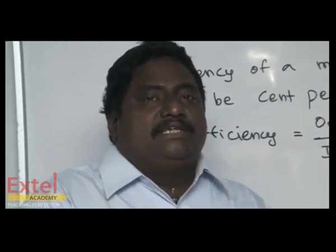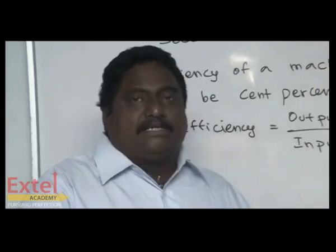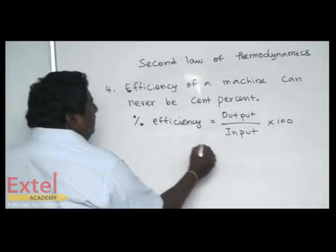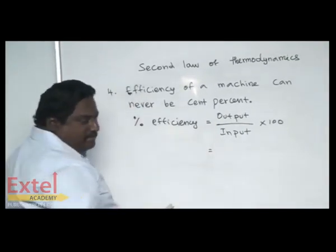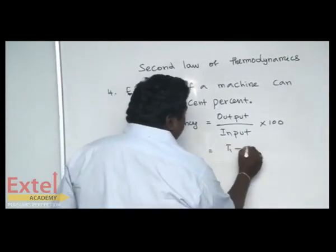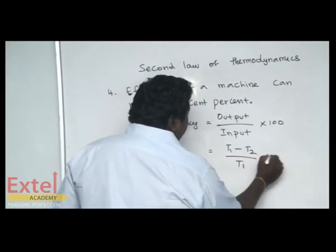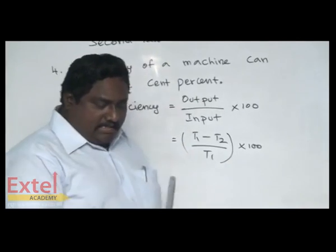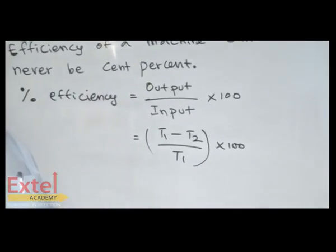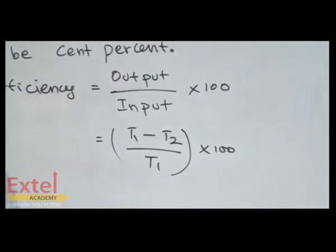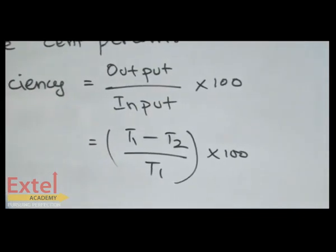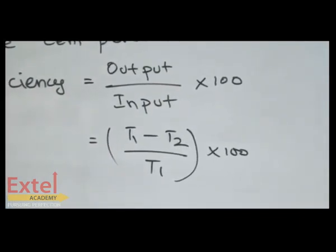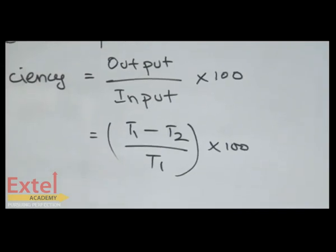That is, efficiency cannot be 100 percent. The efficiency can also be written as (T1 minus T2) by T1 into 100, where T1 is the initial temperature of a heat engine and T2 is the final temperature of a heat engine, according to the second law of thermodynamics.